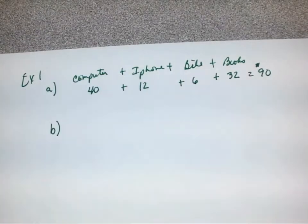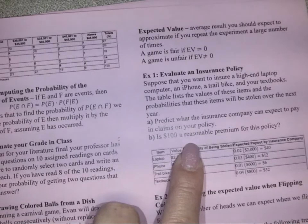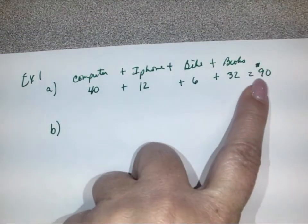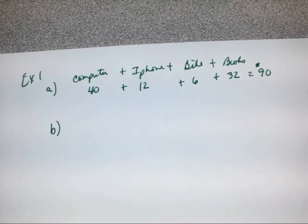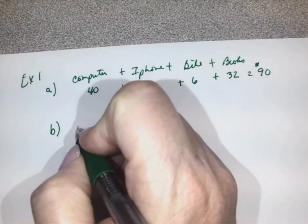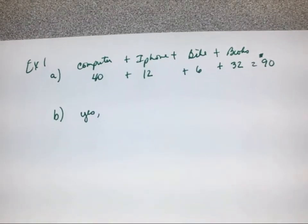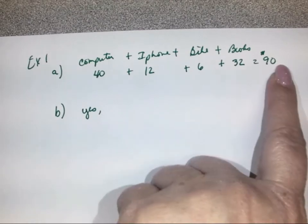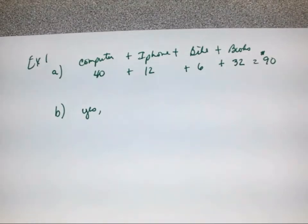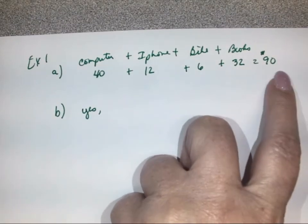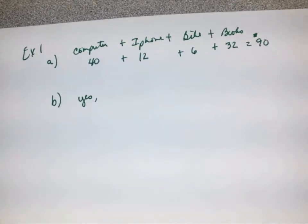For part B, it asks: is $100 a reasonable premium for the policy? Well, if it's going to cost the company $90, and they're charging us $100, that's not too bad — it's only $10 above. We can say yes, because the company needs to make a profit, otherwise it won't be in business very long. They're only charging $10 more, so it's not unreasonable. They make profit because they have a lot of people who insure their items.